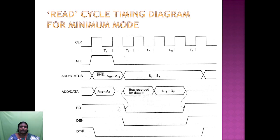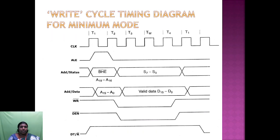The read cycle timing for minimum mode shows: when the clock is in the high position, the address bits are output. The read operation occurs, and the data transmit/receive signal transitions from low to high. For the write cycle timing, when clock signal T2 goes from high to low, the write signal is asserted. Data enable and data transfer/receive signals are activated, and data is written starting from T2.